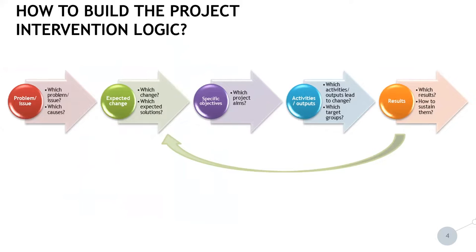Coming now to the question of how to build a project intervention logic. The starting point is the problem or issue to be addressed — which problem exists in a certain region, what causes can be identified, and what is the expected change or solution for addressing this problem. As a next step, one needs to define the specific objectives which the project is aiming for, and the activities and outputs which are leading to these objectives and which consider the target groups to be involved.